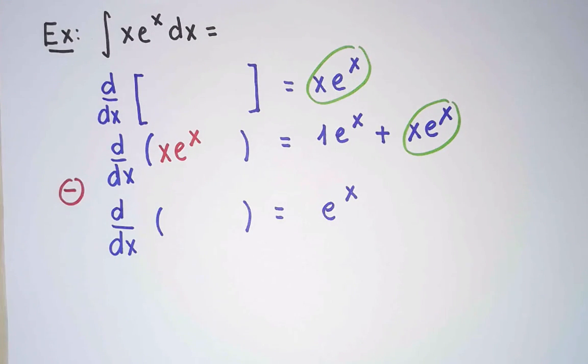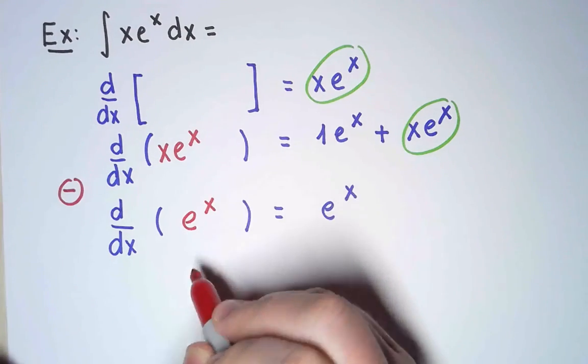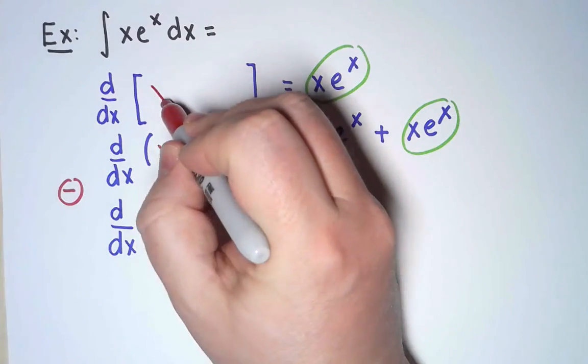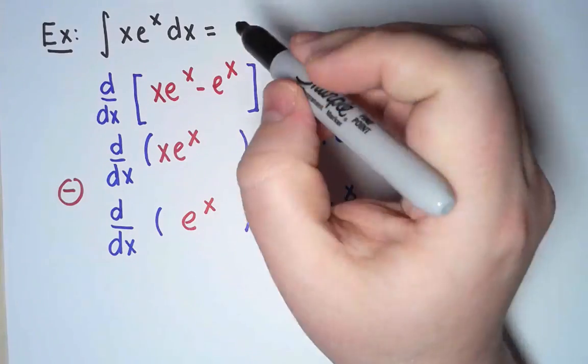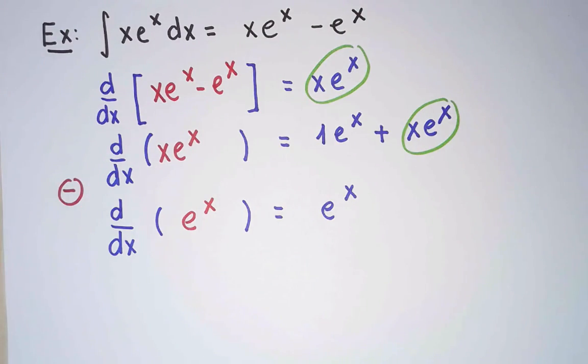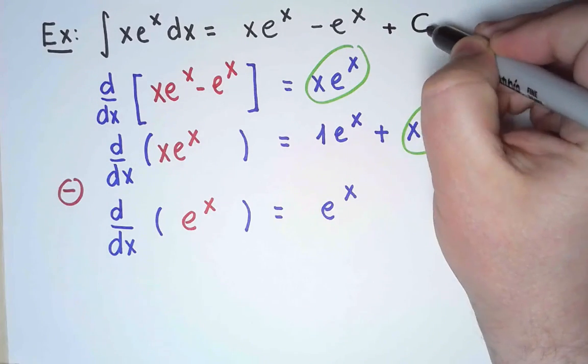I think this will work. And in fact, finding a function whose derivative is e to the x is easy. That's just e to the x. So the function I was looking for is x e to the x minus e to the x. Great! That is my antiderivative. Well, that is one antiderivative. To get all of them, I need to add an integration constant.